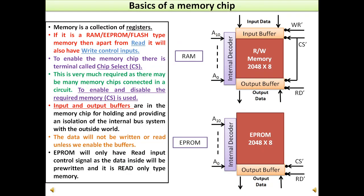What is the basic structure of a memory chip? The memory is a collection of registers, the register is a collection of flip-flops, and a register is one of the sections which needs to be accessed where we can write or read data. If it is a RAM, an EEPROM, or a flash type memory, then apart from a read signal, it will also have a write control signal. To enable the memory chip, there is a terminal called chip select. If the chip select is active low type, we will have to provide a low signal to this terminal to enable the functionalities of this memory.